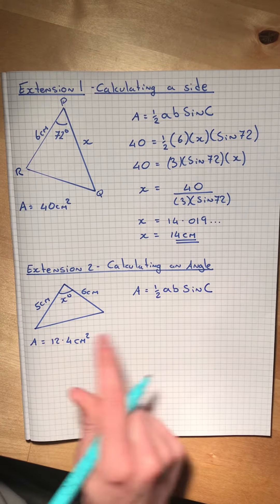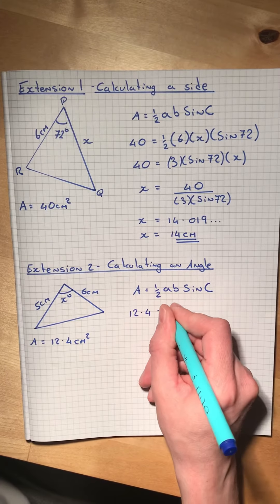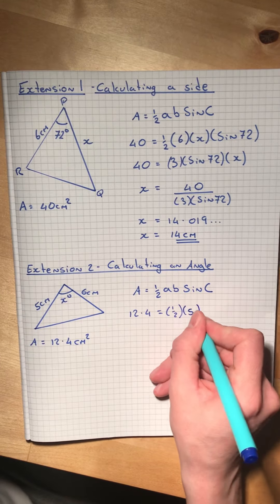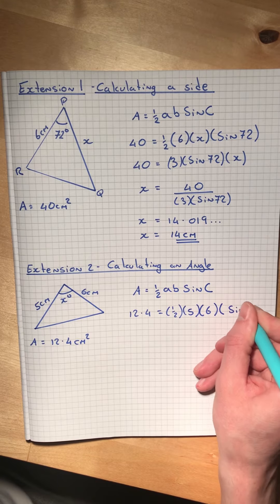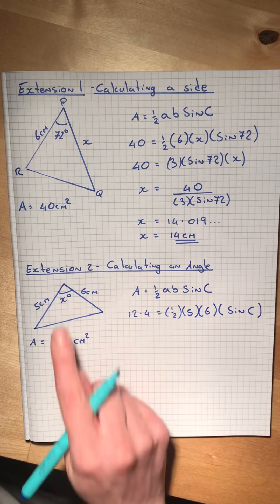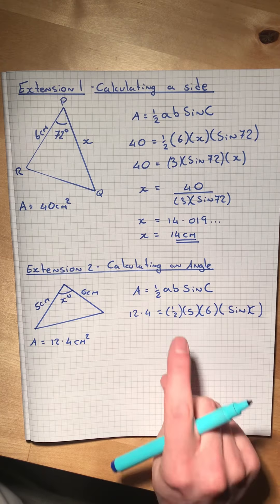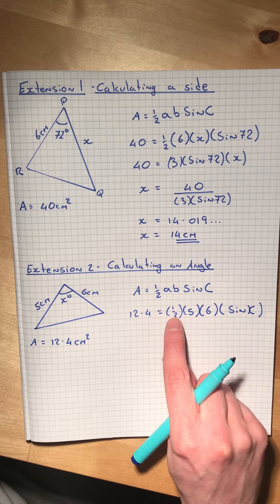So if we substitute in, 12.4 equals one-half times 5 times 6 times sine of the angle between them. Let's call that x. Half times 5 times 6... well, 5 times 6 is 30, and half of 30 is 15.